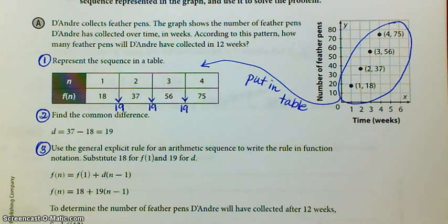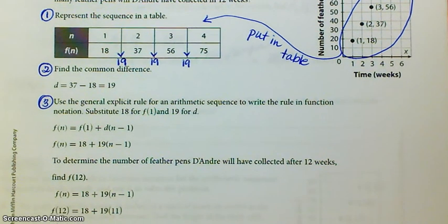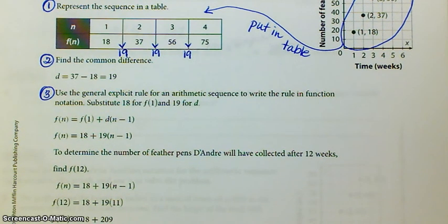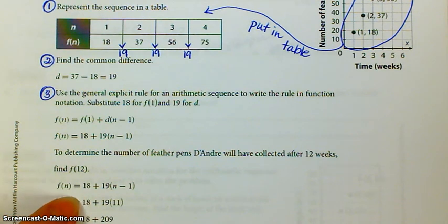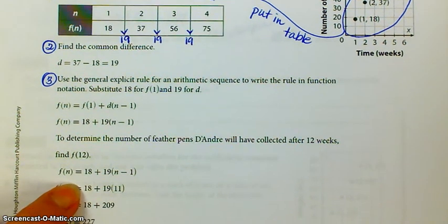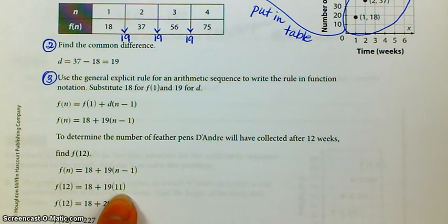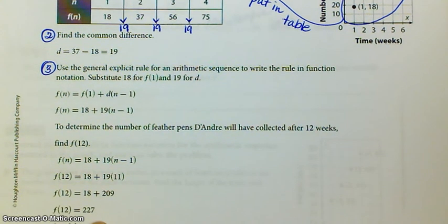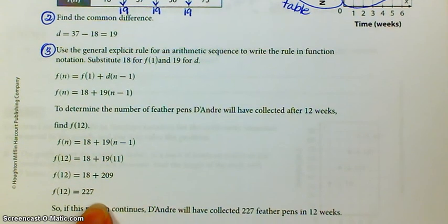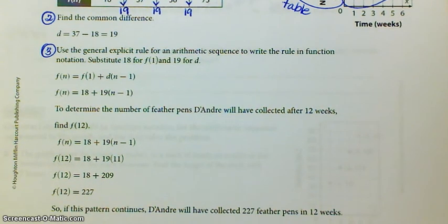And then they want you to tell them how many feather pens he's collected in 12 weeks. So you're finding f of 12. I just put in 12 for my n. 12 minus 1 gives me 11. So 18 plus 11 times 19, which is 209. And after 12 weeks, DeAndre will have collected 227 feather pens.